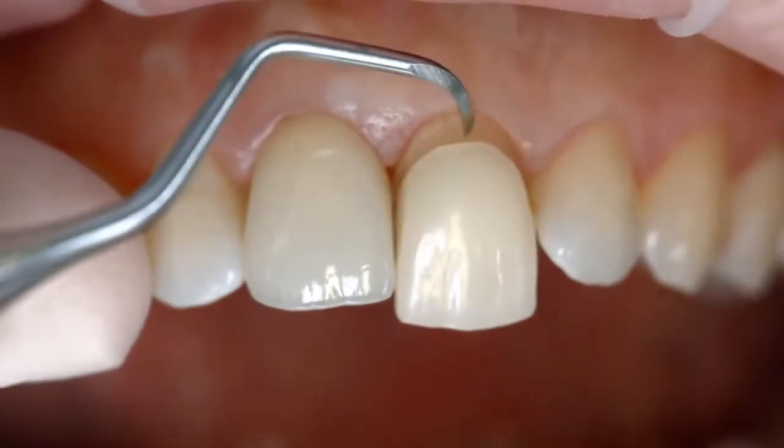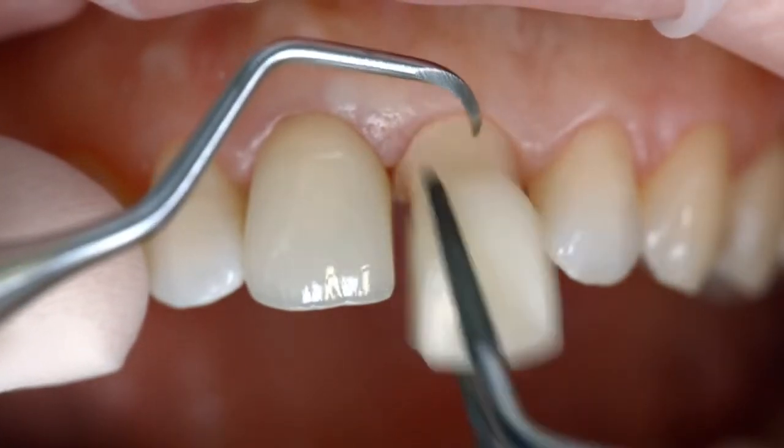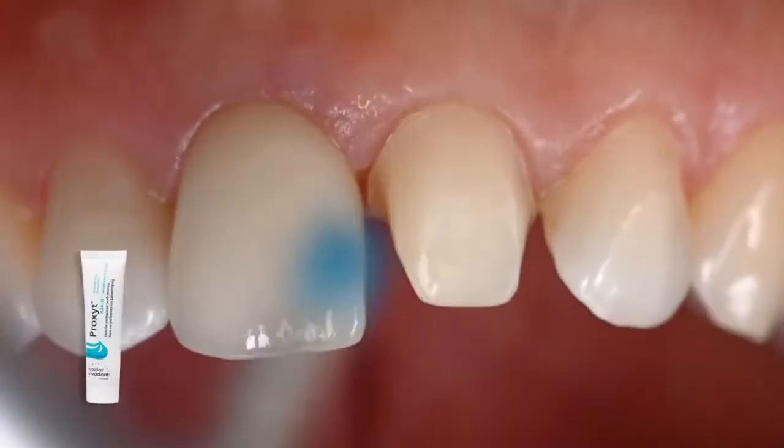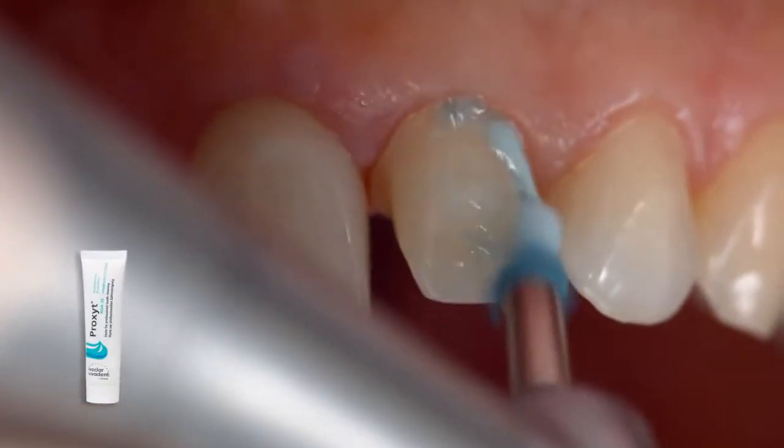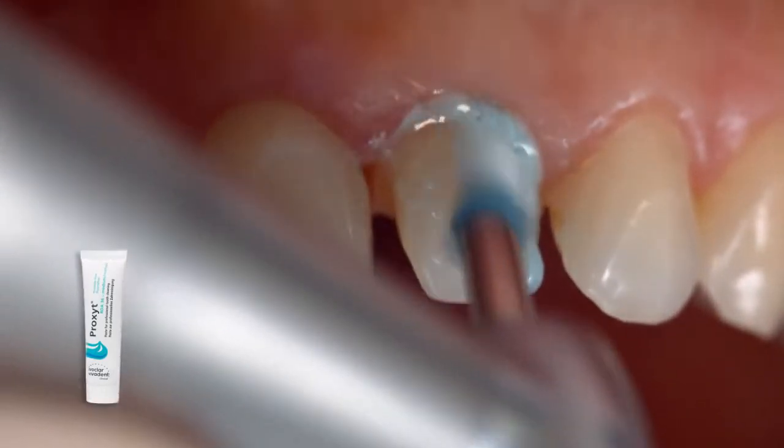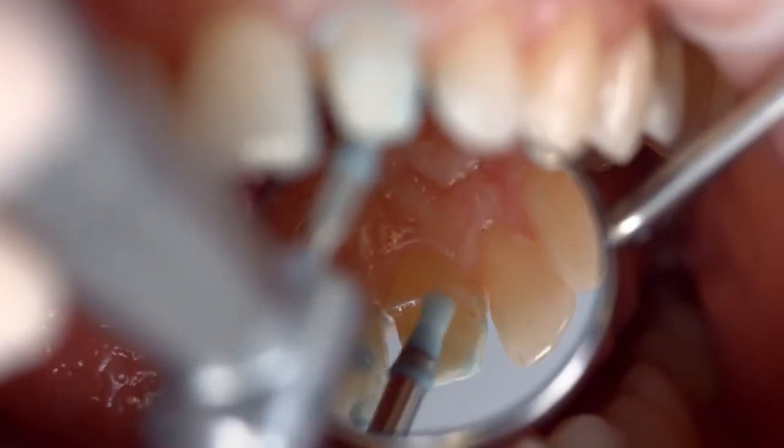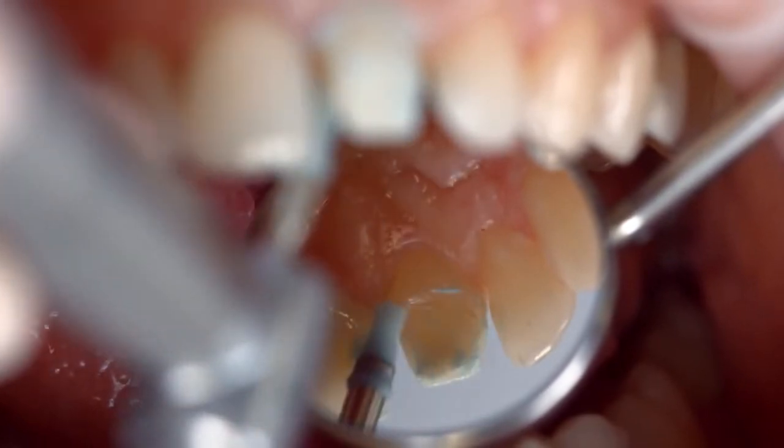Remove the temporary restoration. Clean the preparation with a polishing brush and fluoride-free cleaning paste, such as fluoride-free Proxit. This ensures that all temporary cement residues are removed.